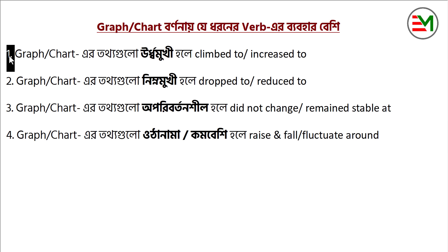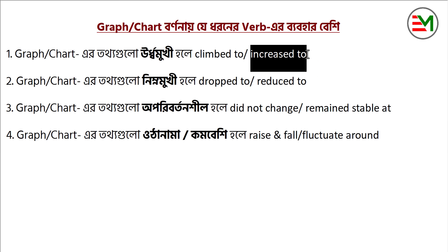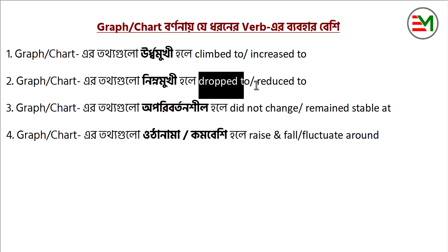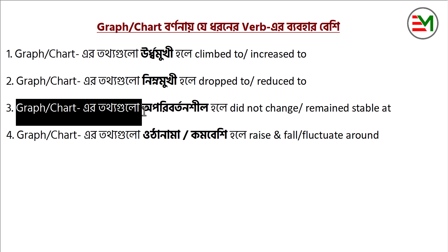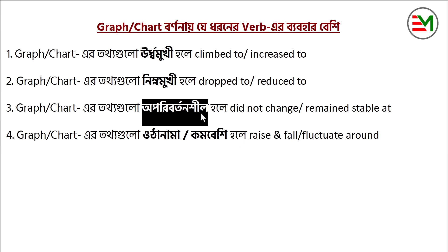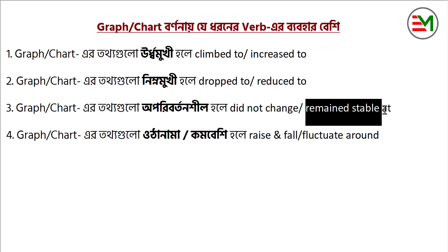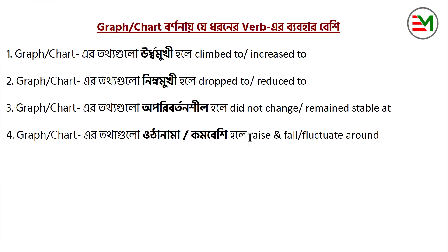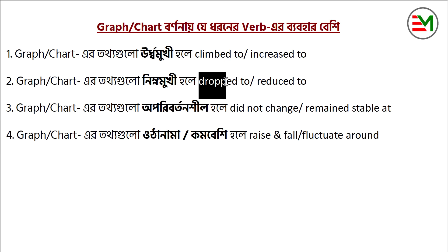When the graph goes up, use 'climb to' or 'increase to.' When it goes down, use 'drop to' or 'reduce to.' When it does not change, use 'did not change' or 'remain stable at.' When it goes up and down, use 'fluctuated around.' For example, you can replace the description using these terms.